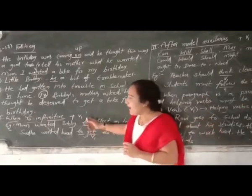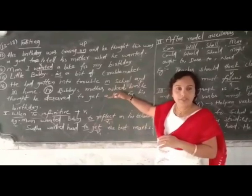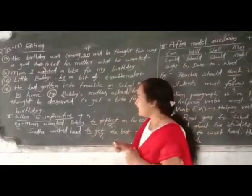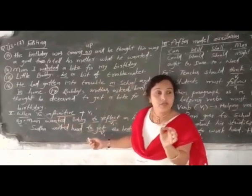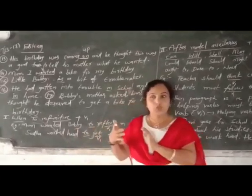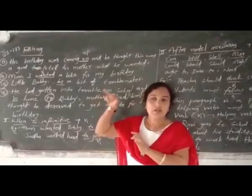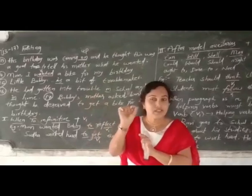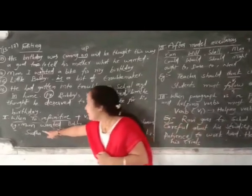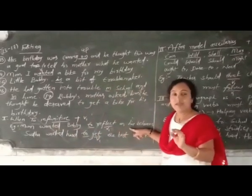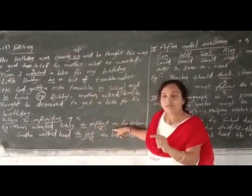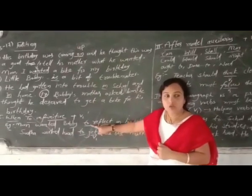I would like to introduce some rules for the editing part. Rule one: when you get a 'to infinitive' — for example, 'I want to get good marks,' 'he goes to school to study' — after 'to infinitive,' you must always write V1 only. 'Mom wanted Bobby to reflect on his behavior' — 'to' plus V1: 'reflect' is V1. Work hard 'to get' the best marks — also 'to' plus V1.